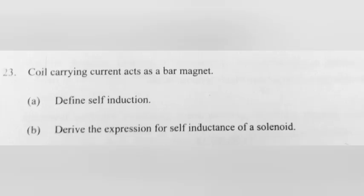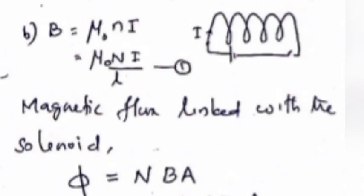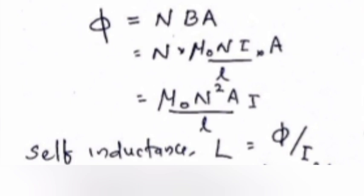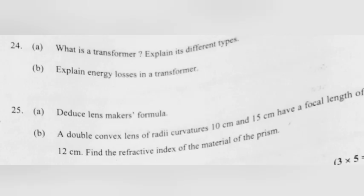Define self-induction: It is the property of a circuit by which it opposes the growth and decay of current in the circuit. Derive self-inductance of a solenoid: B = μ₀nI = μ₀nI/l. Magnetic flux: φ = NBA = N·(μ₀nI/l)·A = μ₀N²A·I / l. Self-inductance L = φ/I = μ₀N²A / l.